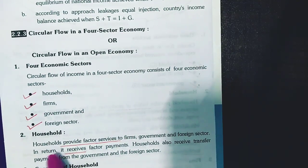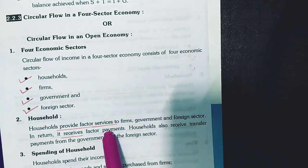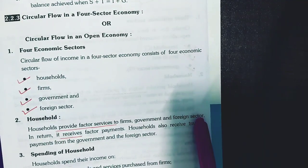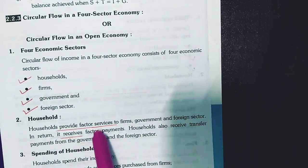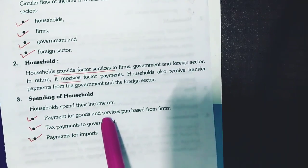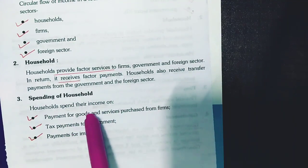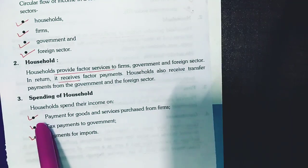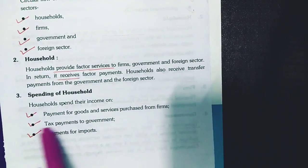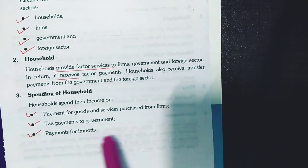The second point is the household. Households always provide factor services to firms, government, and the foreign sector. In return, they receive income. Whatever income the household sector receives, they spend it on various things — purchasing goods and services from firms, paying taxes to the government, and making payments for imports.